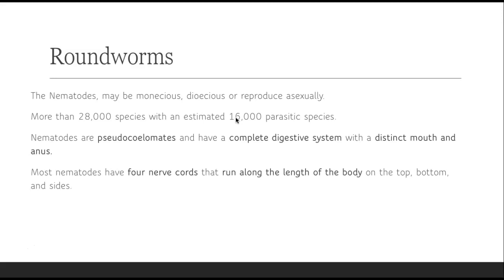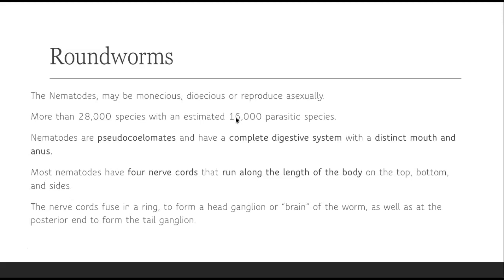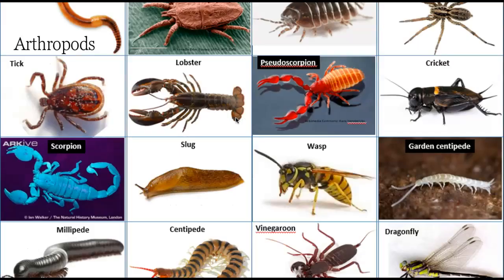Most nematodes are going to have four nerve cords that run along the entire length of the body — on the top, the bottom, and one on each side. The nerve cords fuse in a ring, and that forms a head ganglion, or a quote-unquote brain. It's not really a brain; it's just four nerve cords. But it does centralize in a head region, so it's kind of like a brain, and also at the posterior, or tail end, of the ganglion. Okay, so that's the roundworms.